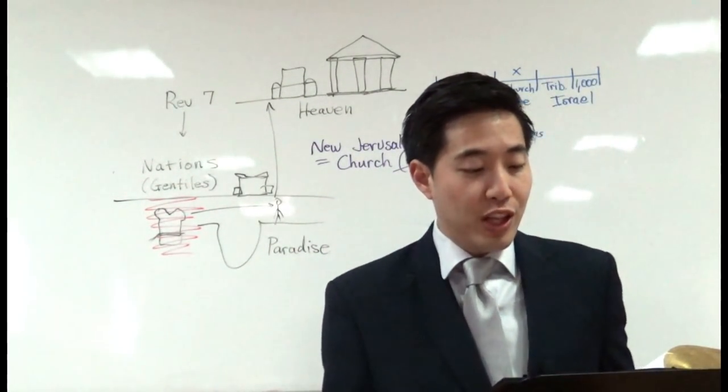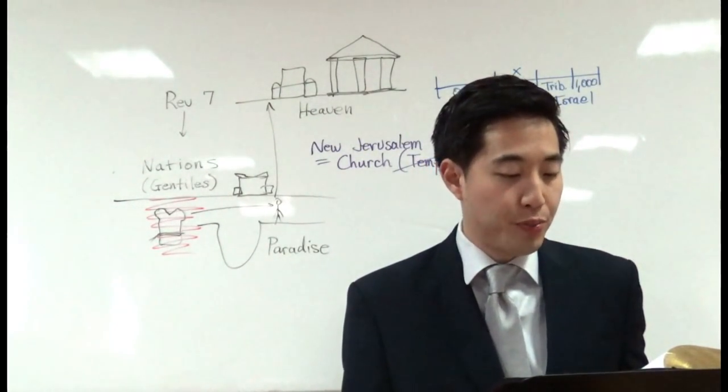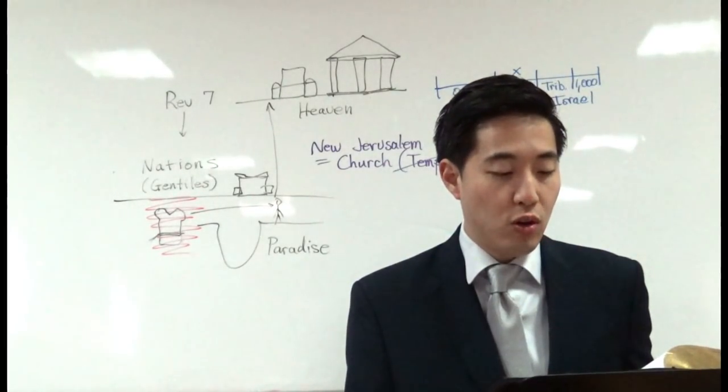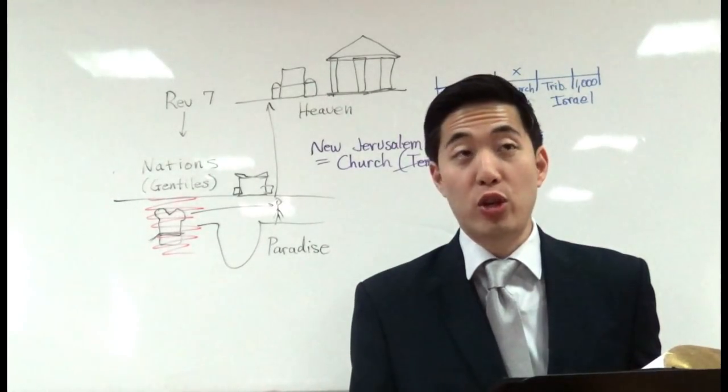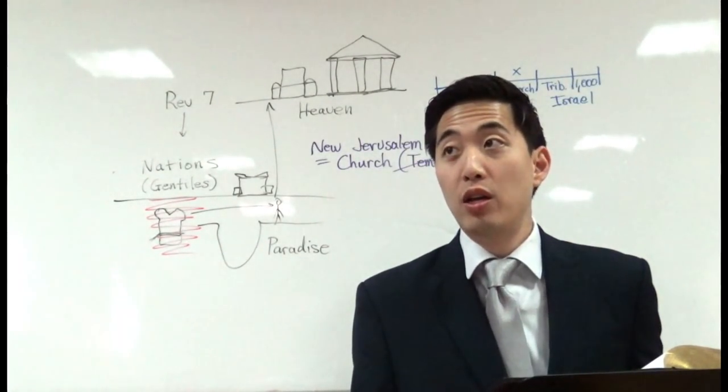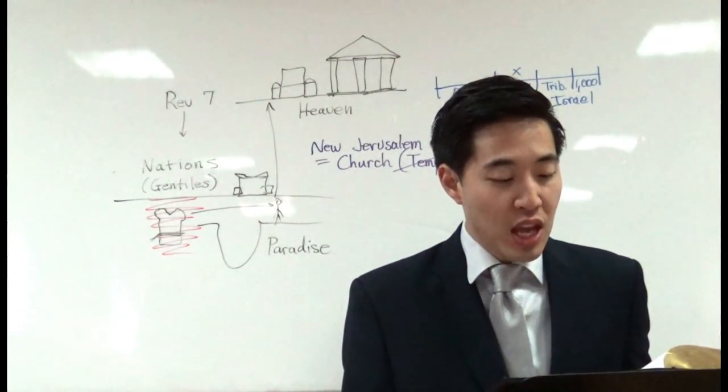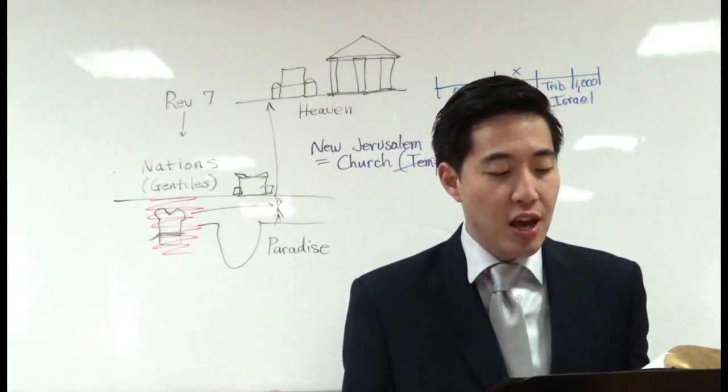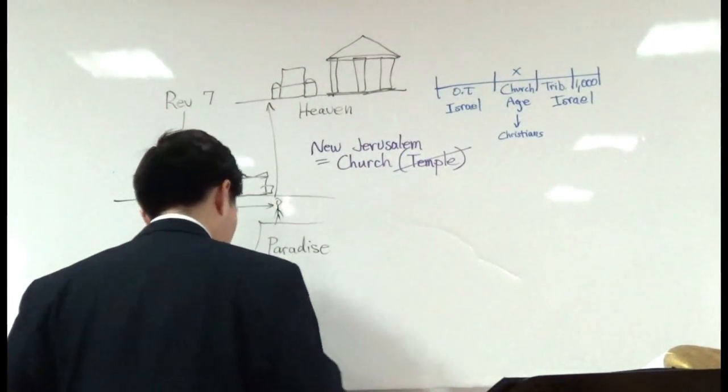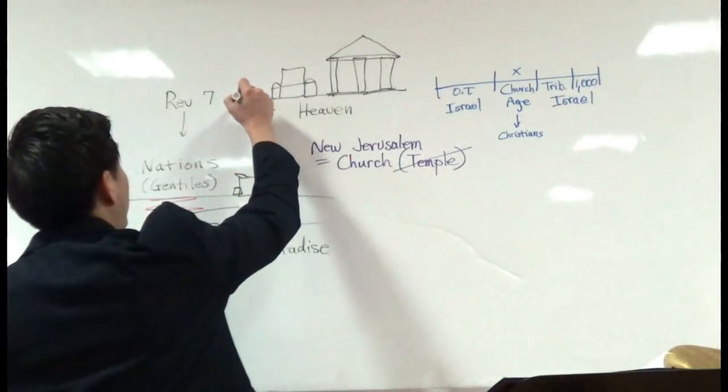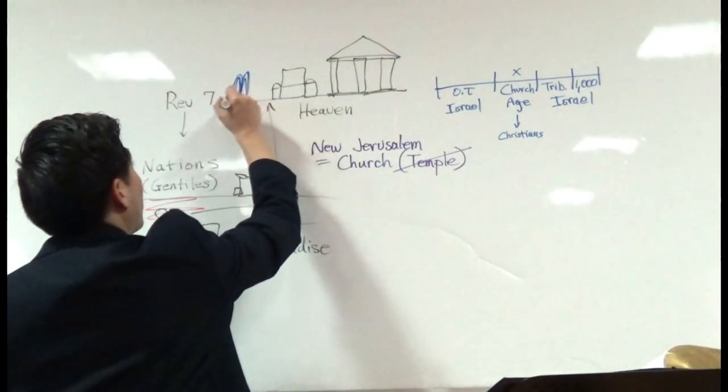Verse 17, for the lamb which is in the midst of the throne. So there's your answer. Jesus is sitting in the middle of the throne. Shall feed them. Why does it read it that way? Because they were starving to death at the tribulation. They had no food. They were the ones being eaten up by the Antichrist, actually. But now Jesus is feeding them. And shall lead them unto living fountains of waters. So up in heaven there are fountains of waters. So that's something. It's going to be such a spectacular sight when we go to heaven one day.